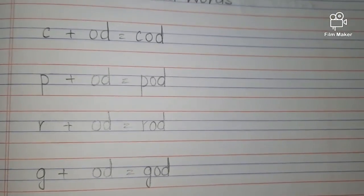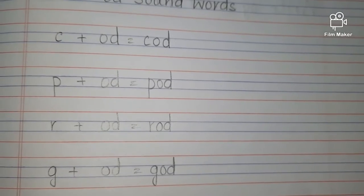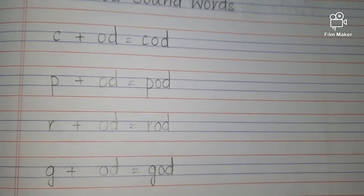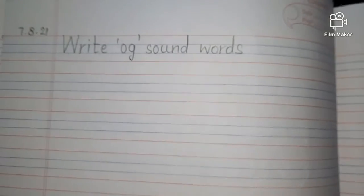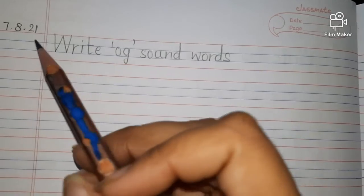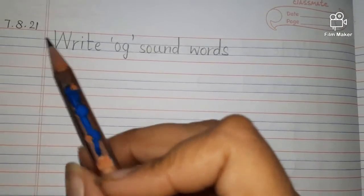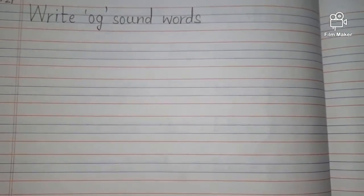Now, after this, come over to the next page again. And there, we will be writing the OG sound words. Again, on this page, we will write down today's date on the top. Then write: OG sound words.